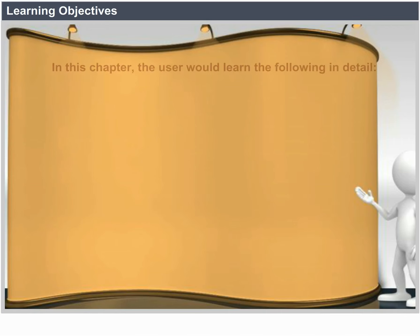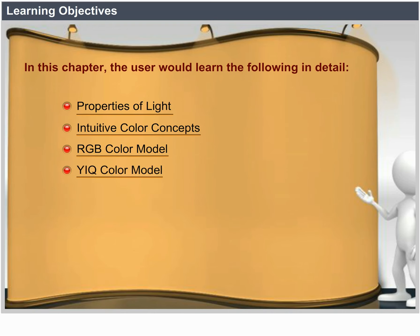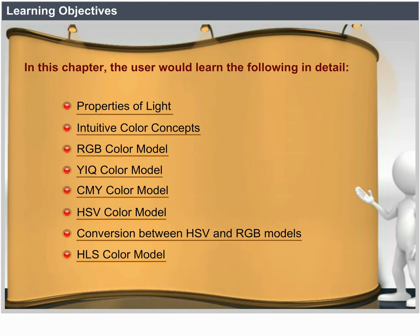Learning Objectives. In this chapter, the user will learn the following in detail: Properties of light, intuitive color concepts, RGB color model, YIQ color model, CMY color model, HSV color model, conversion between HSV and RGB models, and HLS color model.